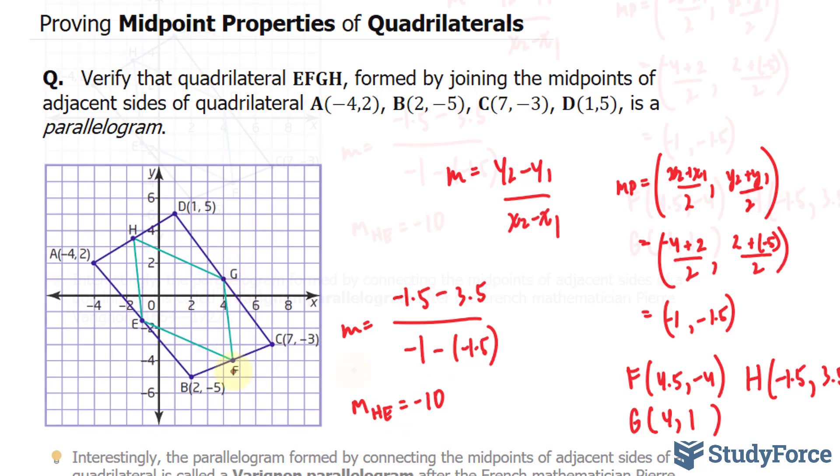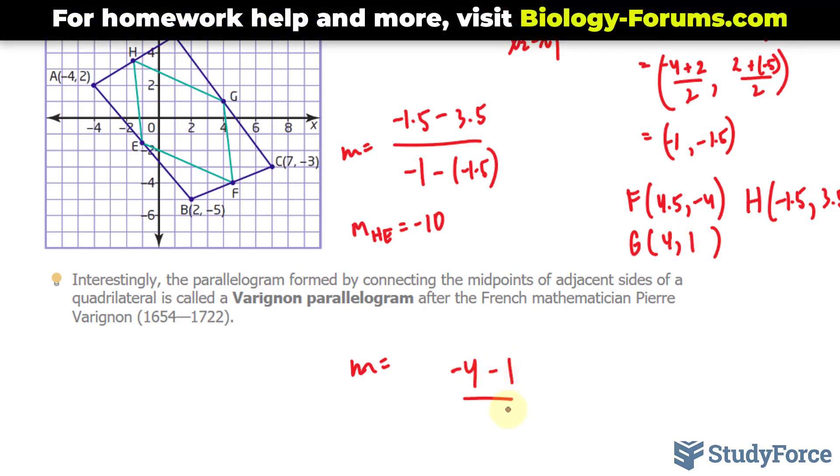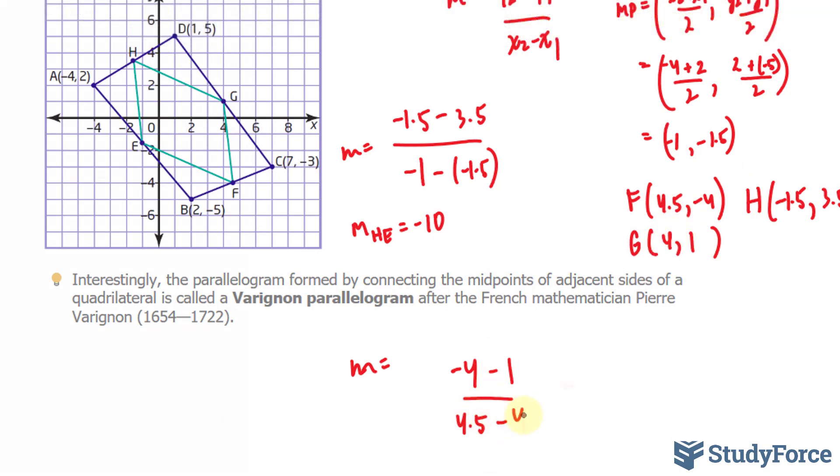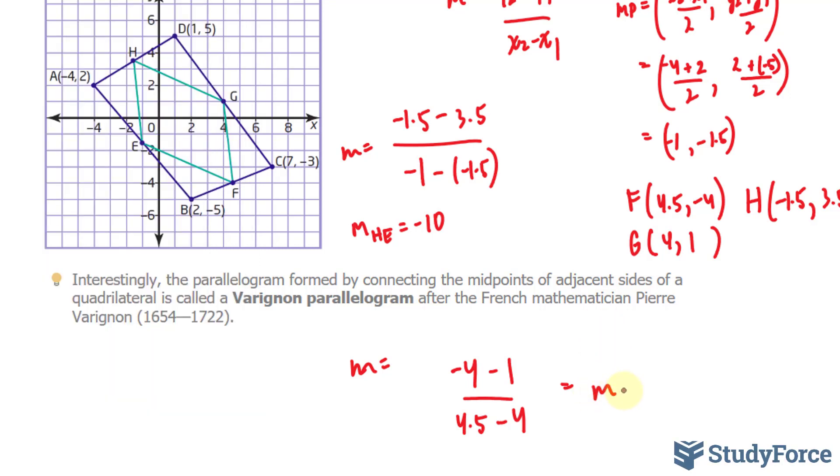Let's go ahead and find the slope of G to F. The slope between G and F, that's our first, that's our second point. So Y2 is negative 4, Y1 is 1, X2 is 4.5, and X1 is 4. Let's open up our calculator. Negative 4 minus 1 divided by 4.5 minus 4, and that gives us negative 10. So the slope between G and F is also negative 10.